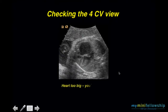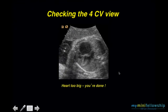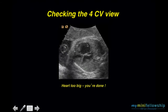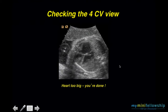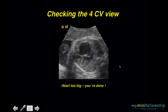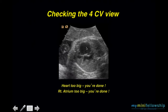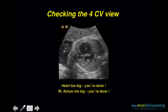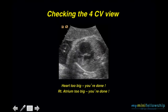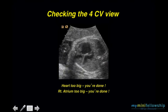If you observe that the heart is too big — the transverse cardiac diameter is more than 50% of the transverse thoracic diameter — you're done. If you notice that the right atrium was too big when compared to the left atrium, you didn't like your comparison of diameters, you're done.